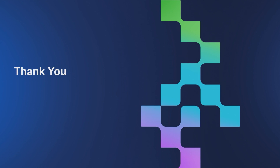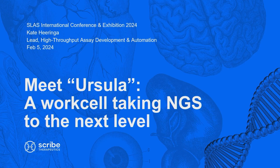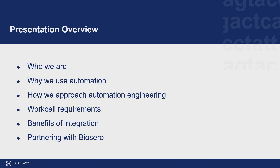My name is Kate Heeringa. I'm here from Scribe Therapeutics in Alameda, California, and I'm going to talk today about Ursula — our automated work cell that we're using to take our next-gen sequencing program at Scribe to the next level. I'll go over who we are, why we use automation, how we approach automation engineering in general, what our requirements were for the specific work cell, why we chose integration, and how partnering with Biosero works to help us build our first NGS work cell.